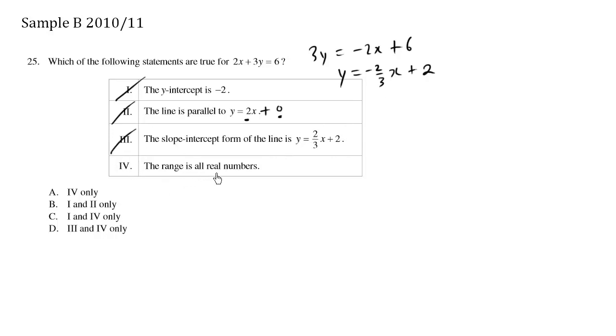The range is all real numbers. The word range means all the possible y values. We can see here that y depends on x for any possible x value. X can be a whole number, it can be an integer, it can be a decimal number. So here, all real numbers are valid for possible y values. So choice 4 is correct, which means that A is correct.